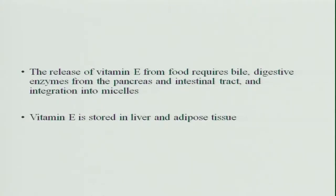The release of vitamin E from food requires bile and digestive enzymes from the pancreas and intestinal tract, and integration into the micellae. Fat is transported in the form of micellae, so vitamin E is integrated into the micellae and stored in the liver and adipose tissue.